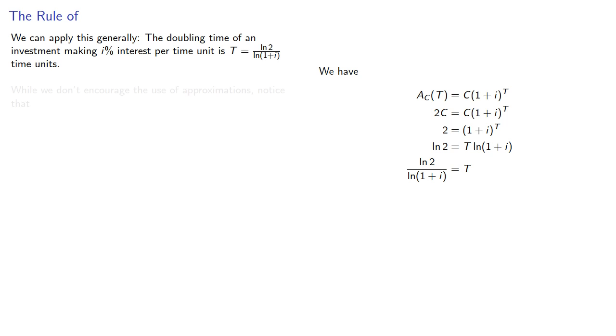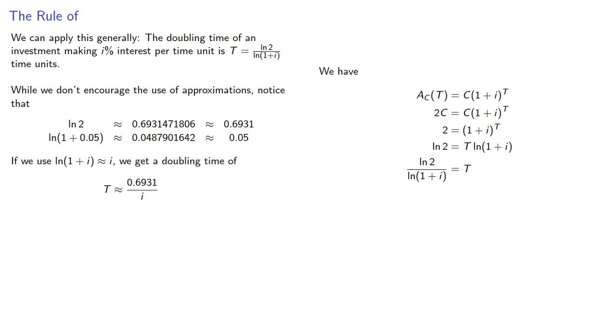Now while we don't encourage the use of approximations, we notice the following. Log of 2 is approximately 0.6931, meanwhile log of 1 plus the interest rate 0.05 is approximately 0.05. So if we use the approximation log of 1 plus i is approximately i, we get a doubling time that can be computed.